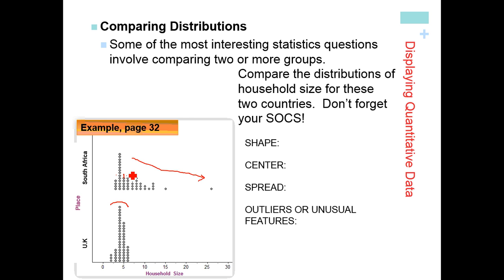Actually, this bar right here. That's 23 at that point, so our 24th and 25th pieces of data would be on this bar, which represents six people in the household. So six would be the median for South Africa.